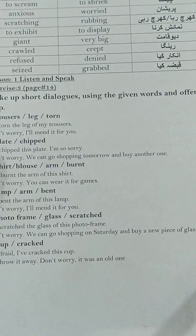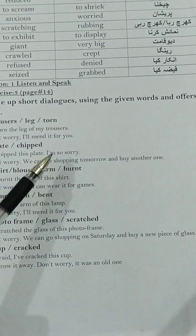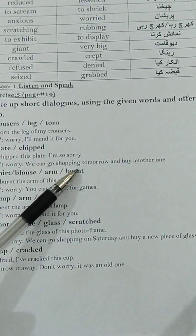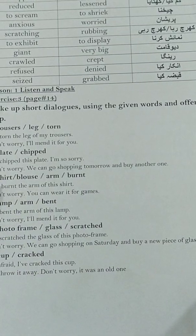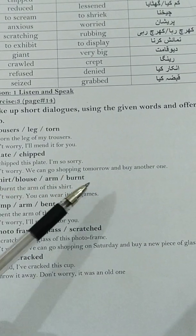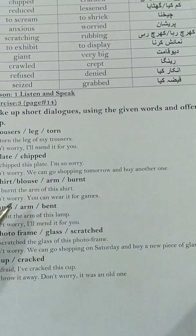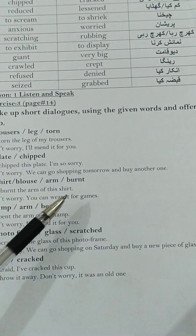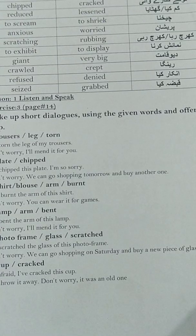Number 2 — Plate, chipped: 'I have chipped this plate.' 'I am so sorry.' 'Don't worry, we can go shopping tomorrow and buy another one.' Number 3 — Shirt/blouse, arm, torn: 'I have torn the arm of this shirt.' 'Don't worry, you can wear it for games.'